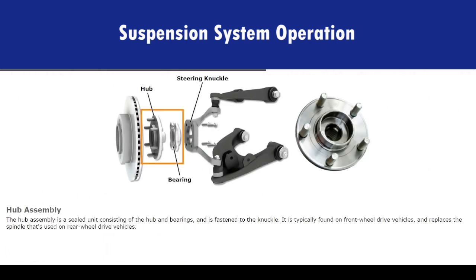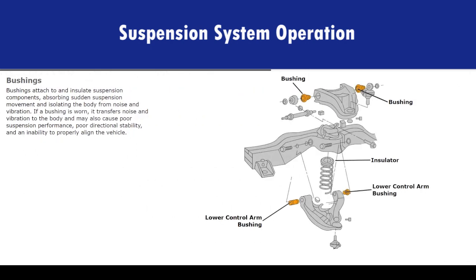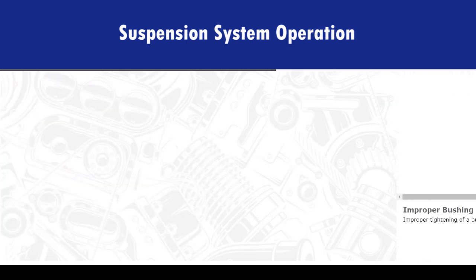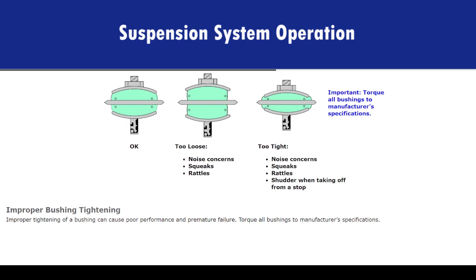The hub assembly is a sealed unit consisting of the hub and bearings, fastened to the knuckle. It is typically found on front-wheel drive vehicles and replaces the spindle used on rear-wheel drive vehicles. Bushings attach to and insulate suspension components, absorbing sudden suspension movement and isolating the body from noise and vibration. If a bushing is worn, it transfers noise and vibration to the body and may also cause poor suspension performance, poor directional stability, and an inability to properly align the vehicle. Improper tightening of a bushing can cause poor performance and premature failure — torque all bushings to manufacturer specifications.